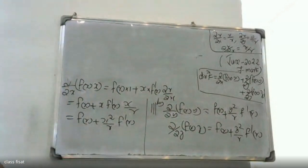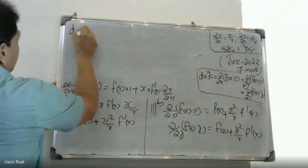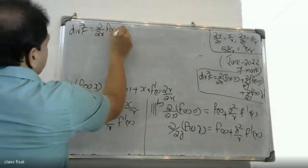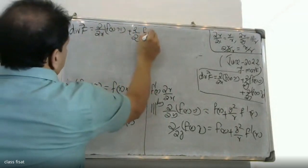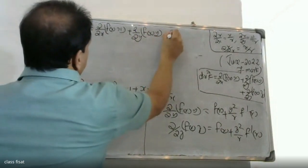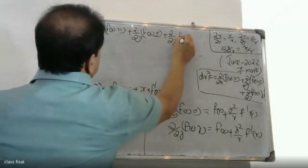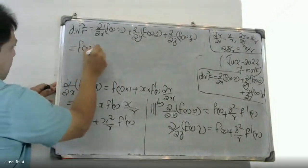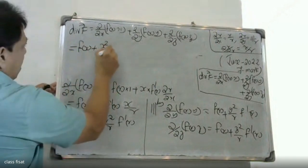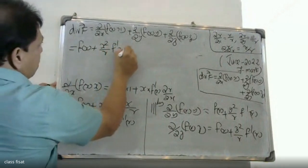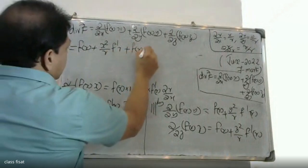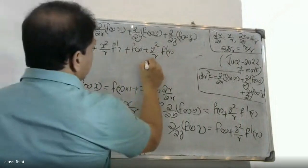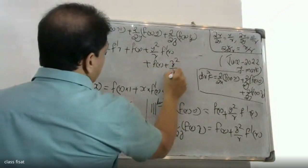Therefore, div f equals ∂/∂x of f(r)·x plus ∂/∂y of f(r)·y plus ∂/∂z of f(r)·z, which expands to f(r) plus x squared over r times f'(r), plus f(r) plus y squared over r times f'(r), plus f(r) plus z squared over r times f'(r).